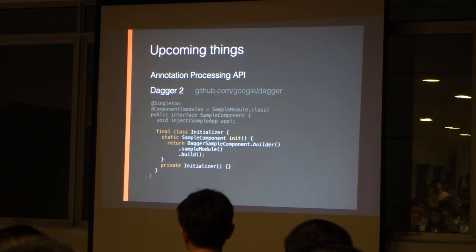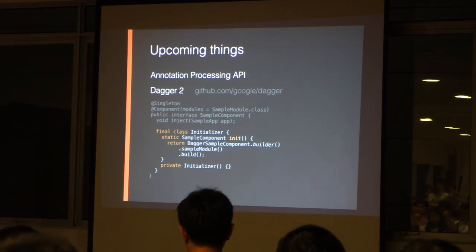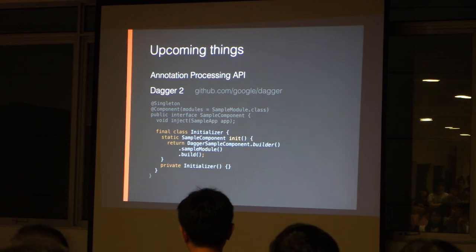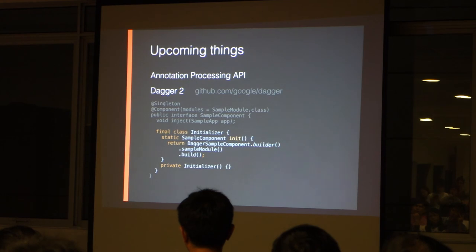This is how the component is initialized. There will be a generated DaggerSampleComponent class generated when you compile the code, and you can use it to build the component. Once the component is built, you call the inject method so that the @Inject annotations will work.